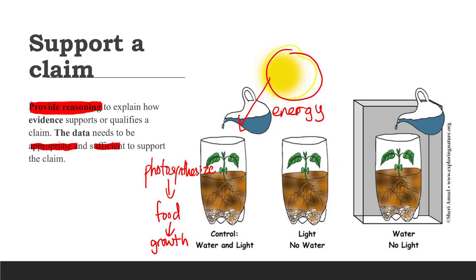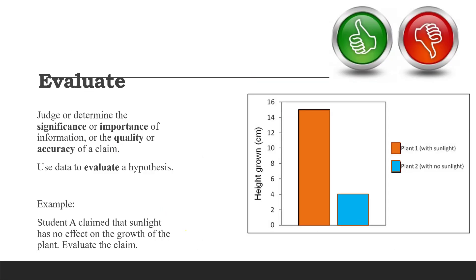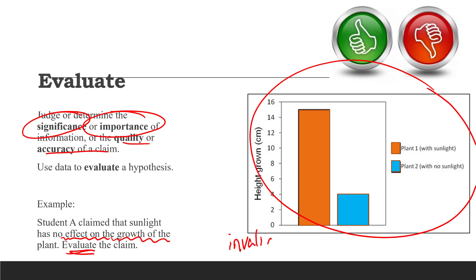Evaluate. Evaluate means we need to judge or determine the significance or importance of information, or the quality or accuracy of the claim. For instance, student A claimed that sunlight has no effect on the growth of the plant, and we need to evaluate the claim. We can clearly identify that this claim is invalid, because it goes against what the data in the graph is indicating. As we progress further into the course, we will learn more about the ways to determine if the difference between these two groups are significant enough.